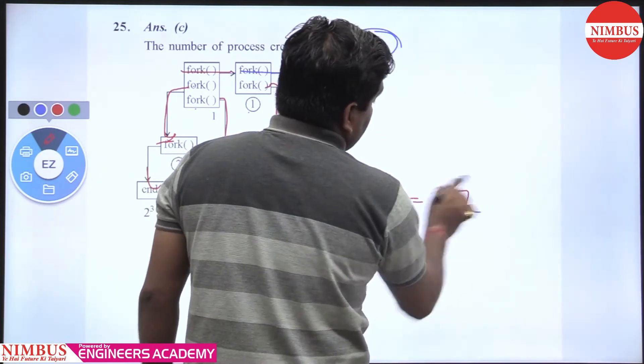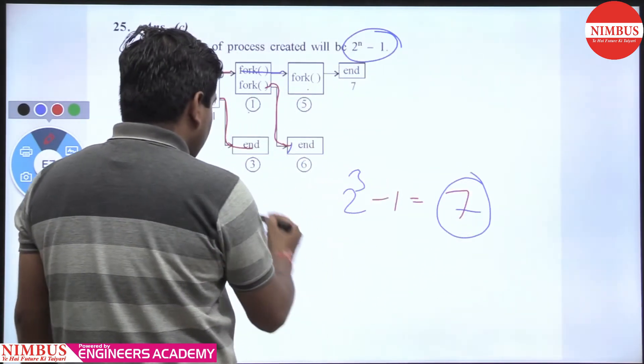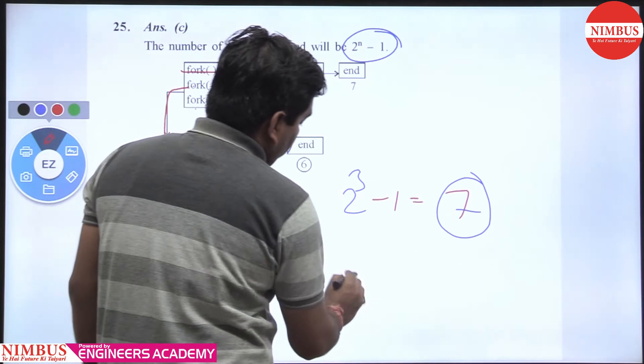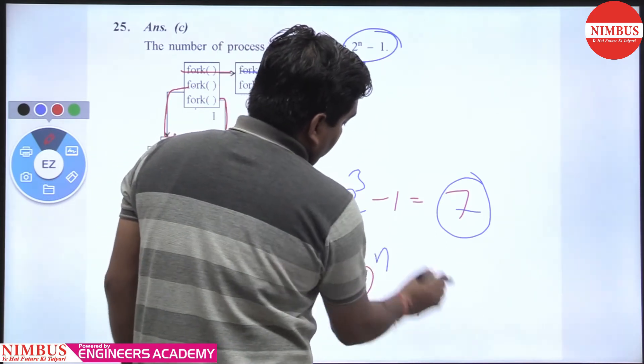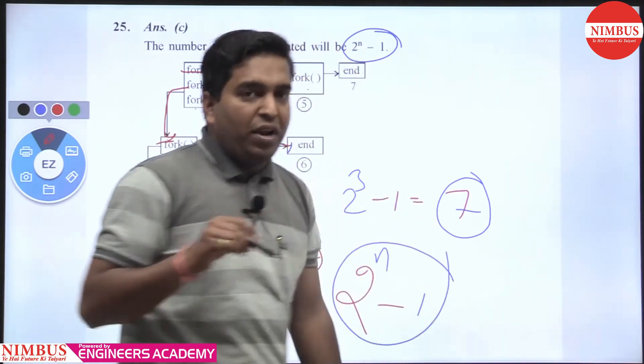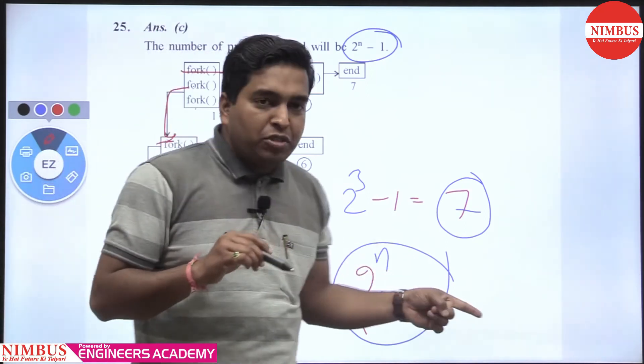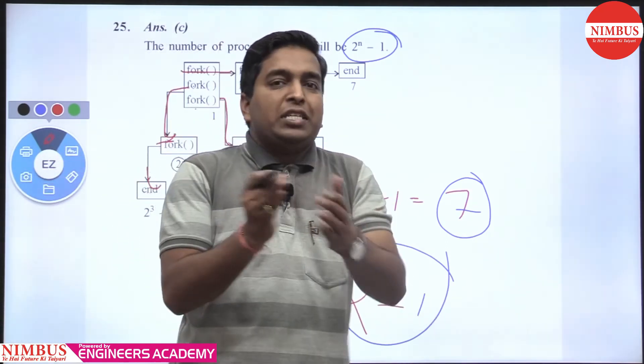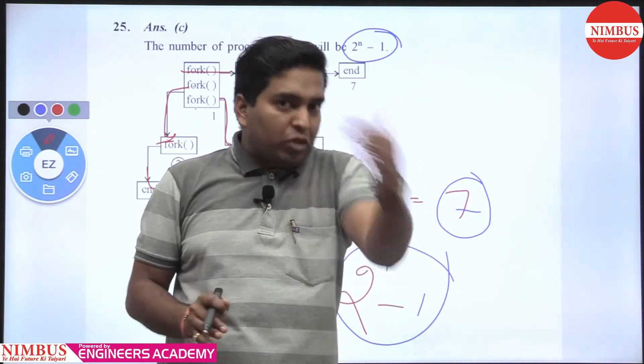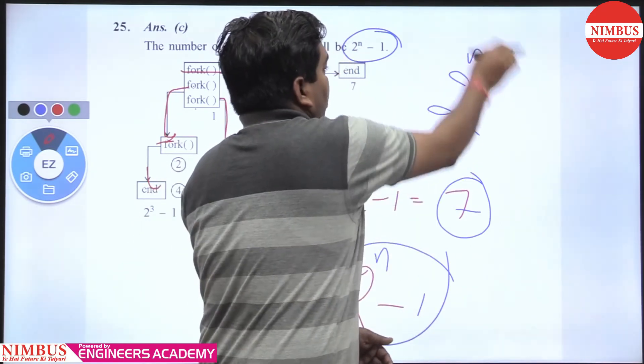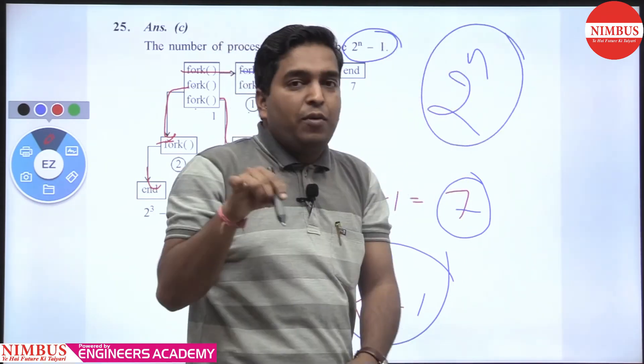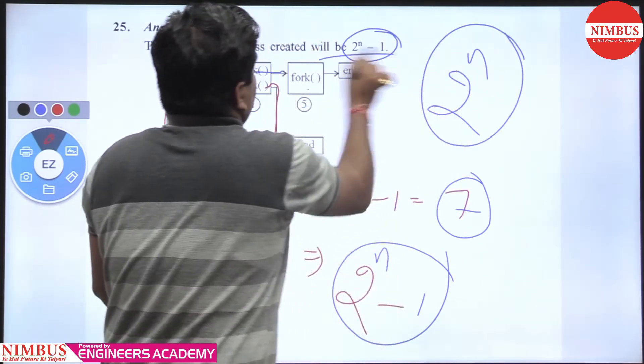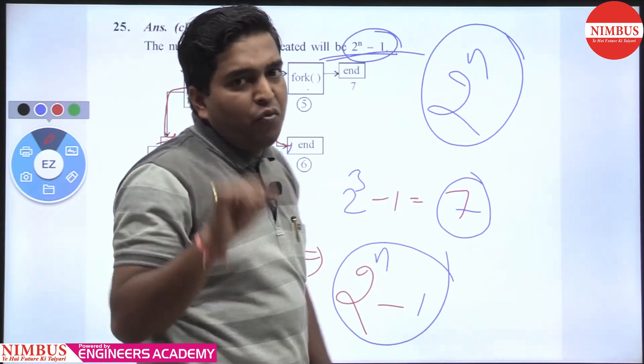In the question, fork is called n times, so the total number of child processes created is 2 raised to power n minus 1. The total number of processes including the parent is 2 raised to power n, but the question is asking about child processes, so the answer is 2 raised to power n minus 1.